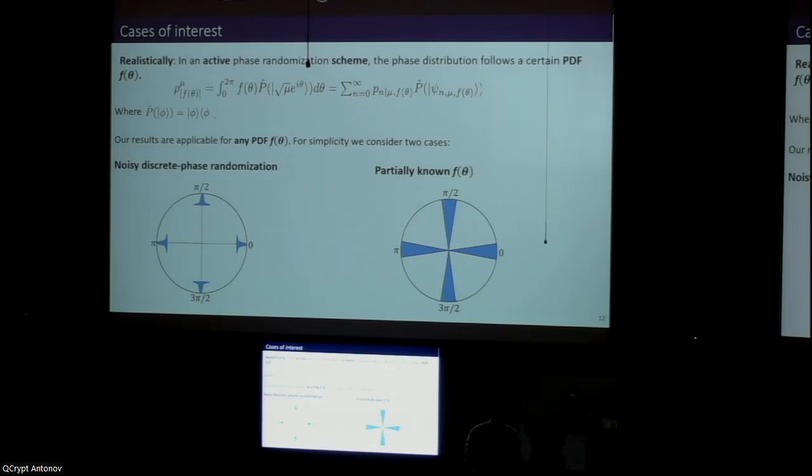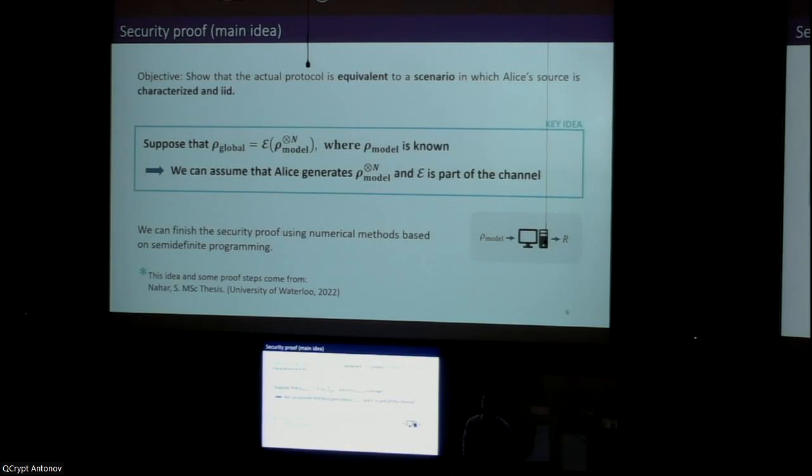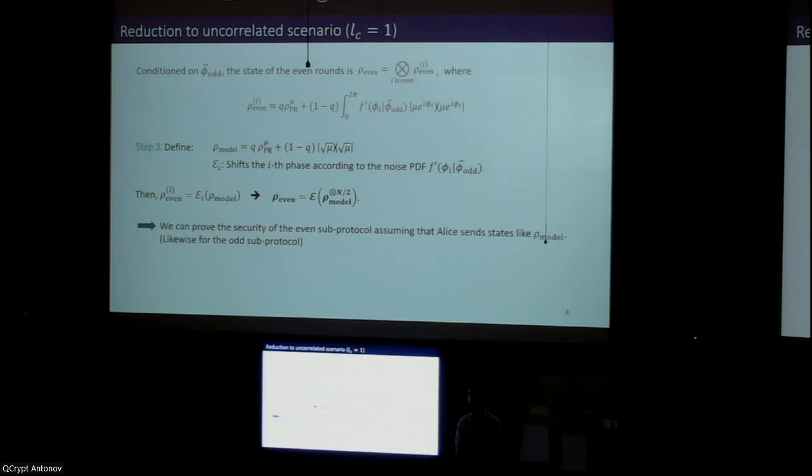One last question for the first talk. Here you need in the passive case, you assume that the phase randomized state and also the coherent state is like a block diagonalized. What if for the passive—isn't that a strong assumption? Because you assume that with probability p, 1 minus p, it's perfectly randomized, and there is probability p it's not randomized at all. Where is the assumption? Let me see. Yeah, step three, definition of ρ_model. It is a strong assumption in this case.